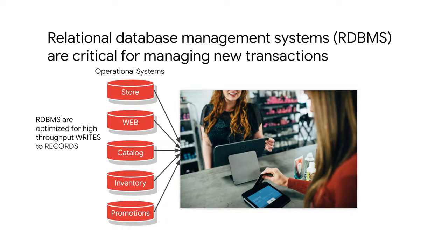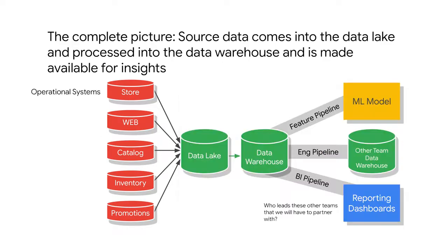So where does all this raw data end up in our data lake and data warehouse discussion? Our operational systems, like our relational databases that store online orders, inventory, and promotions, are our raw data sources. Note that this isn't exhaustive — you could have other source systems that are manual, like CSV files or spreadsheets too. These upstream data sources get gathered together in a single consolidated location, and that's what we call our data lake.